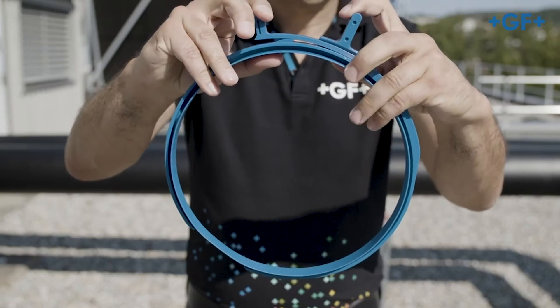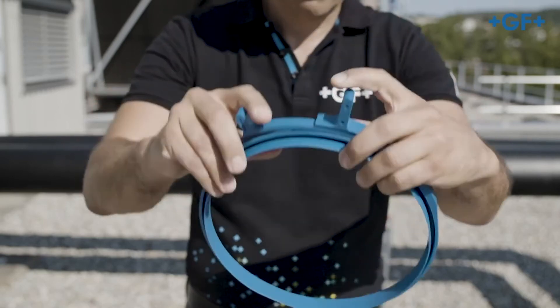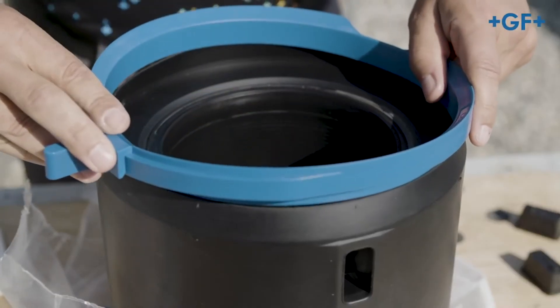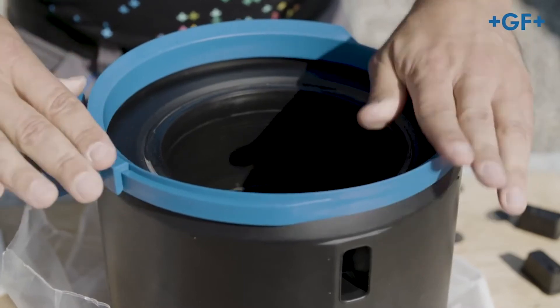Now, insert the assembly aid into the fitting and stretch the sealing lip with it by pressing both handles together until they lock into place.